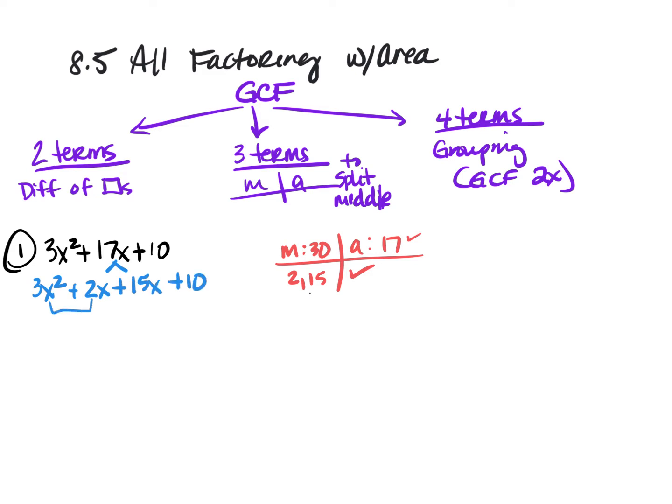All right, so I'm going to pair these up. What's the GCF here? Well, it's just x. So then I have 3x + 2. Bring that plus sign straight down. And what's the GCF here? Well, those two have a 5 in common, so it's going to be... oh no, I'm sorry, it's 3x plus, so 15 divided by 5 is 3. 10 divided by 5 is 2. So there's my GCF. So it's (3x + 2)(x + 5).